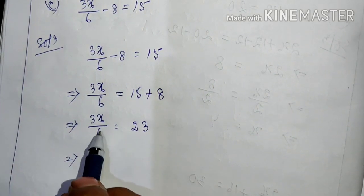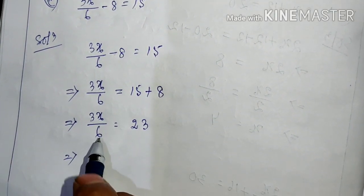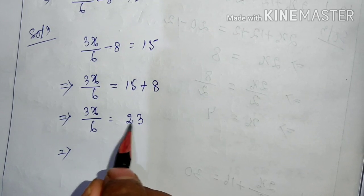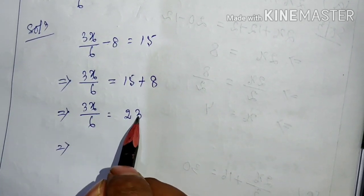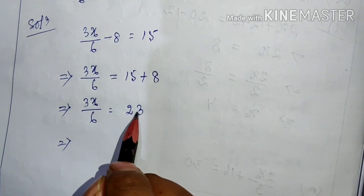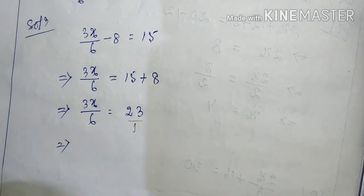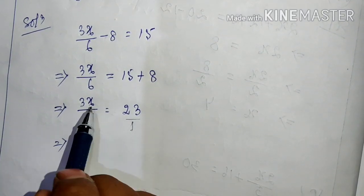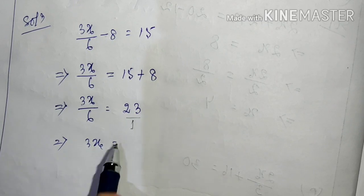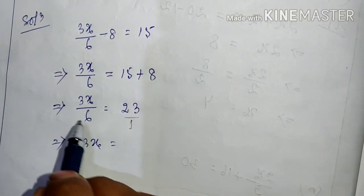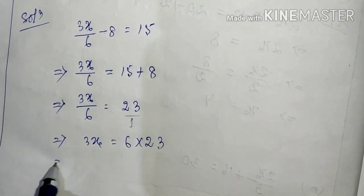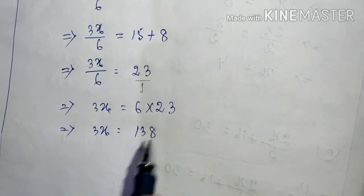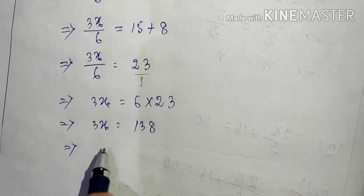Now we have 3x/6 = 23. To remove the 6, we do cross multiplication. On this side there is a numerator and denominator; on the other side, 23 is the numerator with 1 as the denominator. Cross multiplying: 3x into 1 equals 6 into 23. So 3x = 138.